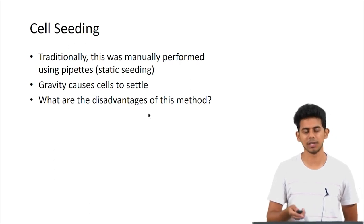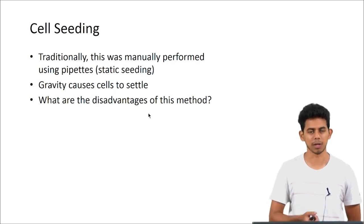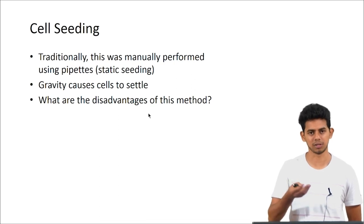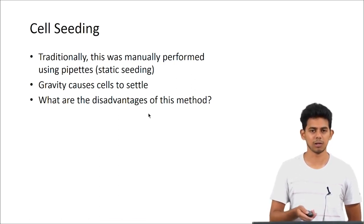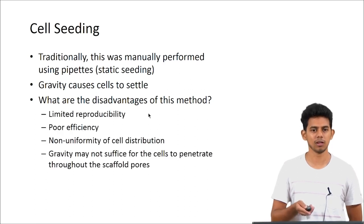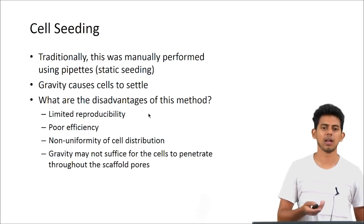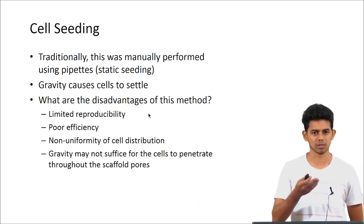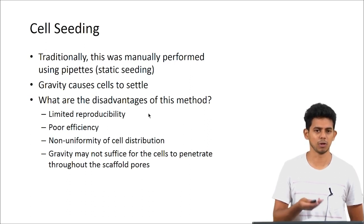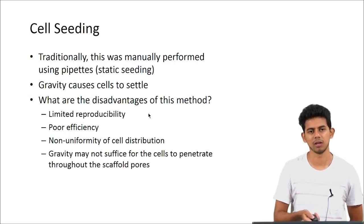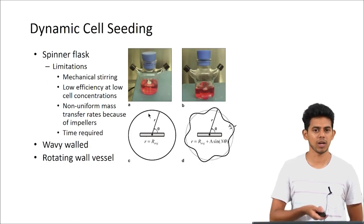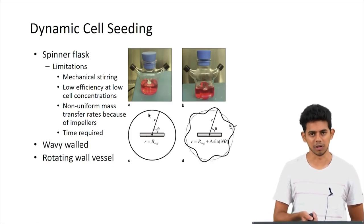First let us look at the cell seeding part. Traditionally, cell seeding was done by dropping the cells onto a scaffold using a pipette. Here you rely on gravity to take the cells into the scaffold. But the disadvantages are there would be a non-uniform distribution of the cells into the scaffold and there may not be complete penetration of the cells throughout the scaffold. Its poor efficiency and reproducibility is also affected.